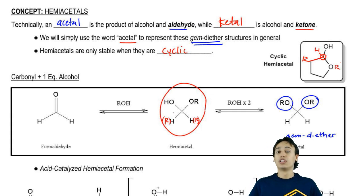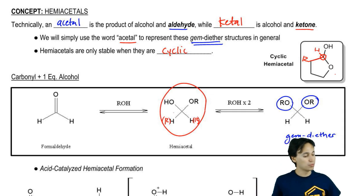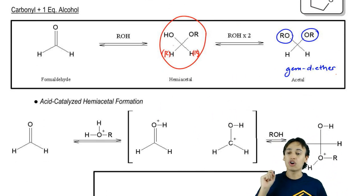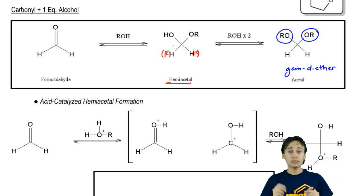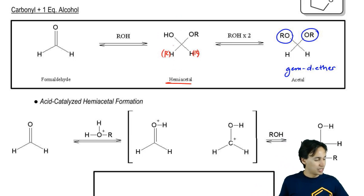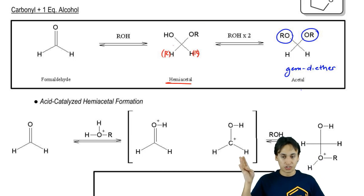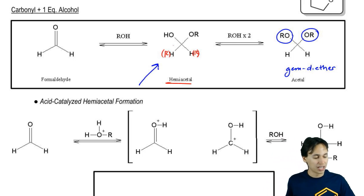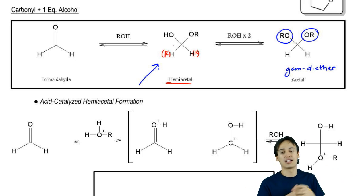When it's a cyclic hemiacetal, you're stable. But if it's not cyclic, you're not going to be able to end up at the hemiacetal. When you react a carbonyl with one equivalent of alcohol, you get a hemiacetal. When you react it with a second equivalent of alcohol, it's called an acetal and it makes that geminal diether. The mechanism for the first and second step is almost identical. The only way to really stop at the hemiacetal is to make the cyclic version, because if it's not cyclic, it'll pass straight through the hemiacetal stage and go straight to acetal.